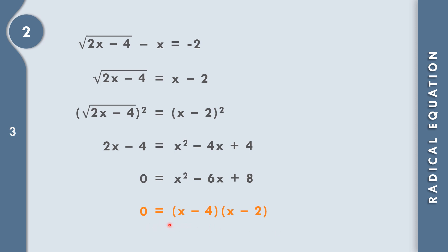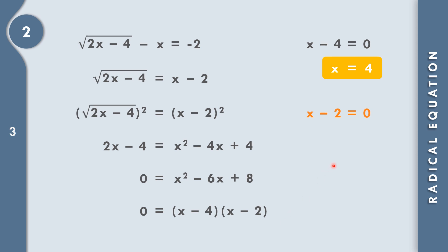Setting each factor equal to zero: x minus 4 equals 0 gives x equals 4, and x minus 2 equals 0 gives x equals 2. Let us check whether x equals 4, x equals 2, or both are the solution set.